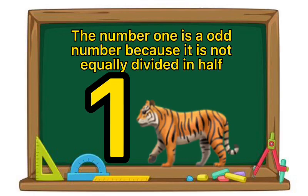The number 1 is an odd number because it is not equally divided in half.